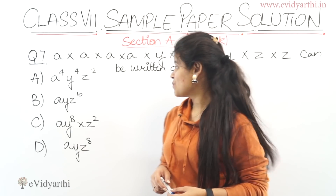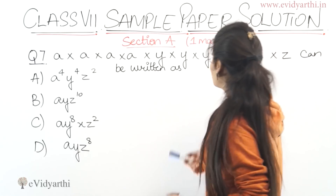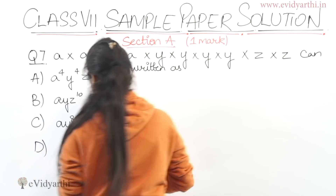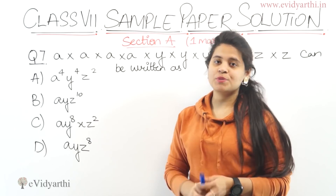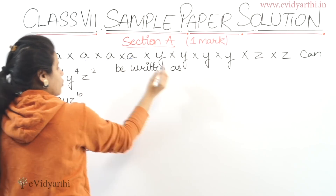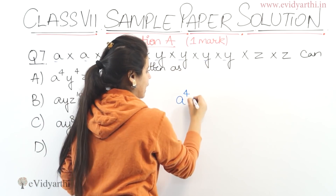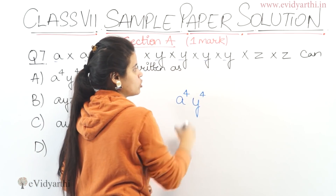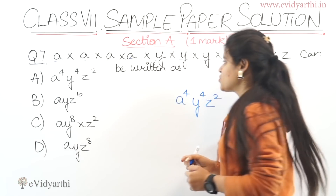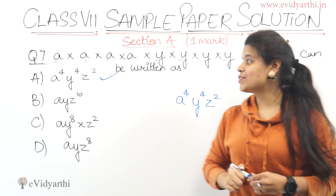Now coming to question number 7. The question says A into A into A into A into Y into Y into Y into Z into Z can be written as. Basically, different options are given. We simply count: 1, 2, 3, 4 — so A raised to the power 4. And then 1, 2, 3 — Y is 3 times, so Y raised to the power 3 (speaker counts as 4). And Z appears 2 times, so Z raised to the power 2. Checking the options, answer is in part A.